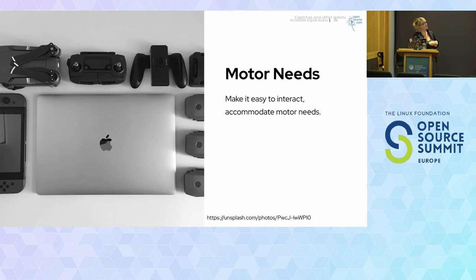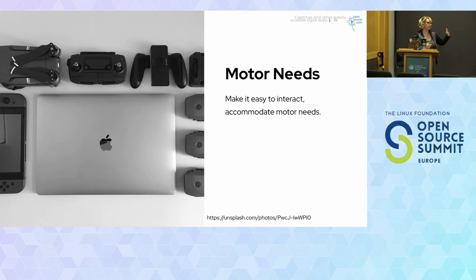Motor needs — we need to make sure our websites are easy to interact with. We have people who live with Parkinson's or palsy from ALS, or maybe they're paralyzed from the waist down from a car accident. And again, there's that woman on the BART with her baby doing the one-handed scroll. We need to accommodate everyone's motor needs.